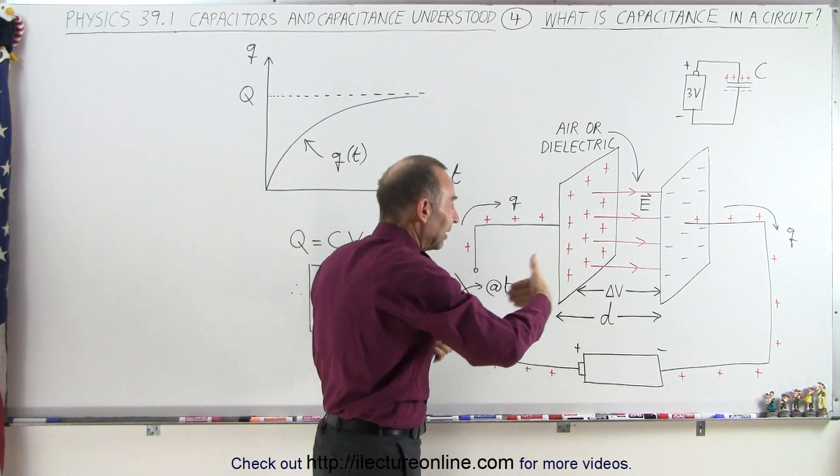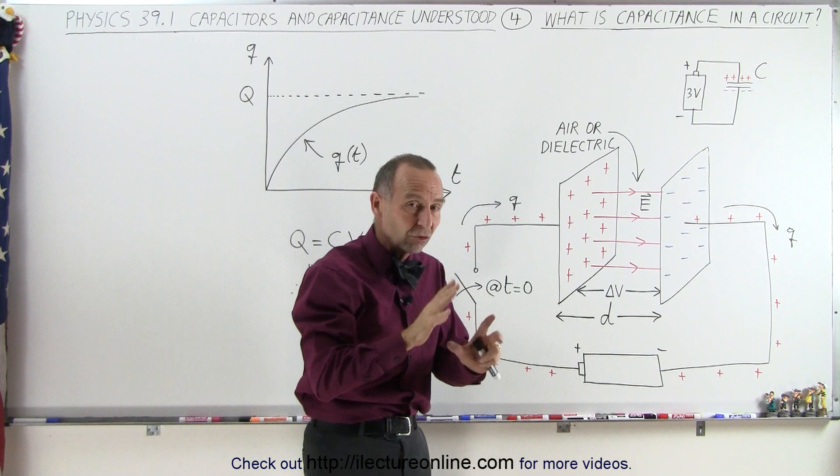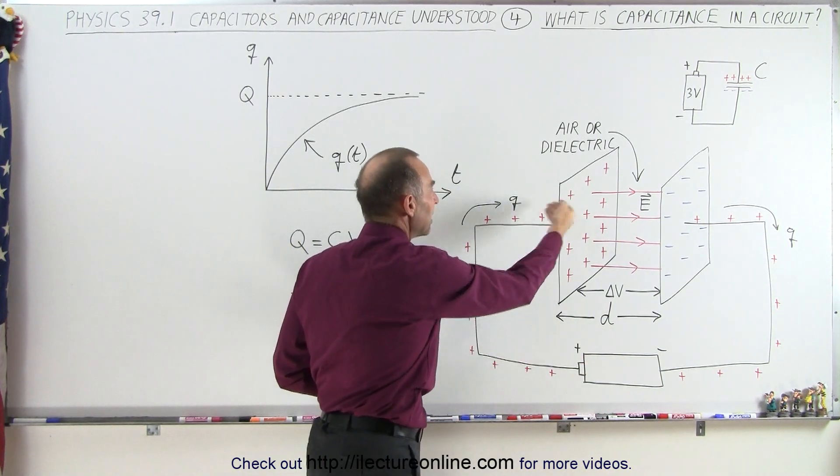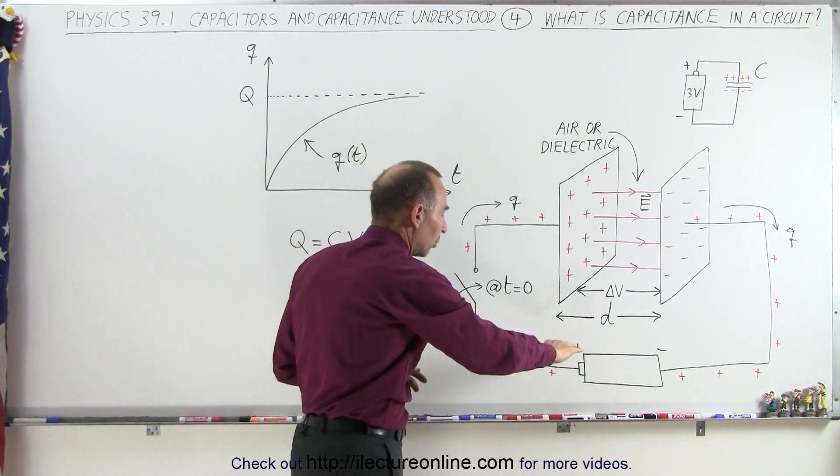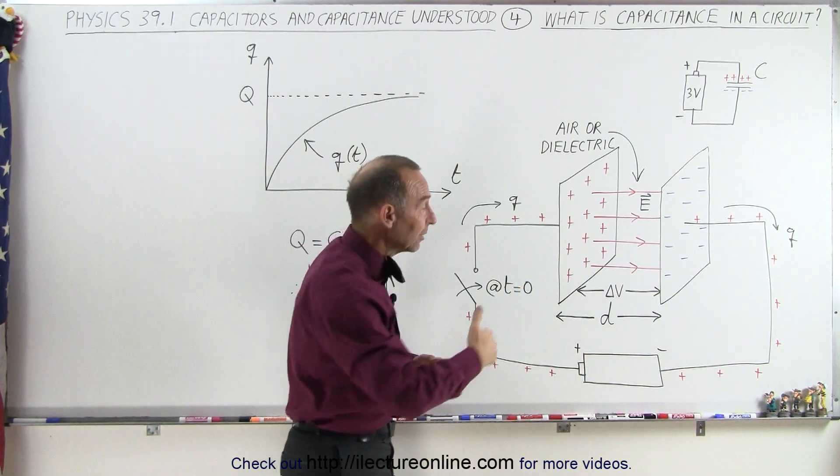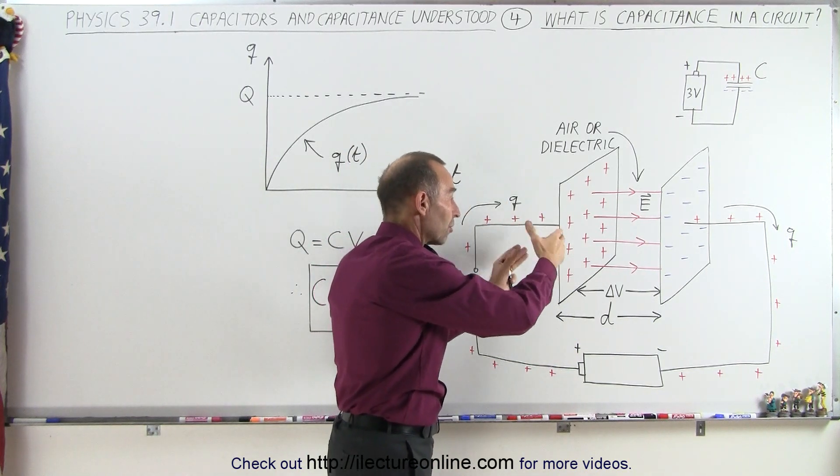So in essence, the result of that is that the force of the repulsive forces pushing back will begin to slow down the current flow onto the capacitor plate. In other words, the charge is being pushed onto the capacitor plate. Again, as the battery continues to put more and more charge on there, the repulsive force becomes stronger and stronger.